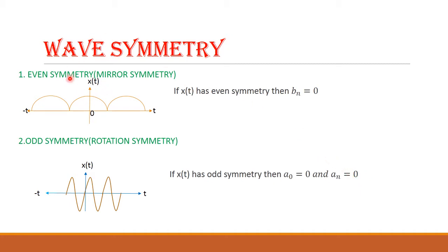Even symmetry is otherwise called mirror symmetry — you get the mirror image of the right-hand side on the left-hand side. This signal exhibits even symmetry. If it is an even-symmetry signal, then bₙ = 0.